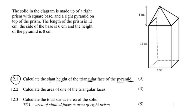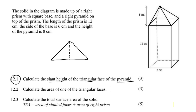Now, the slanted height — let me show you what it's not. They're not talking about the vertical height going down through the middle of the pyramid. What they're talking about is if I take this triangle and draw it: it's this length coming down the middle of the face. I don't mean from the top to the middle of the base — I mean from the top to the base along the face of that pyramid triangle.